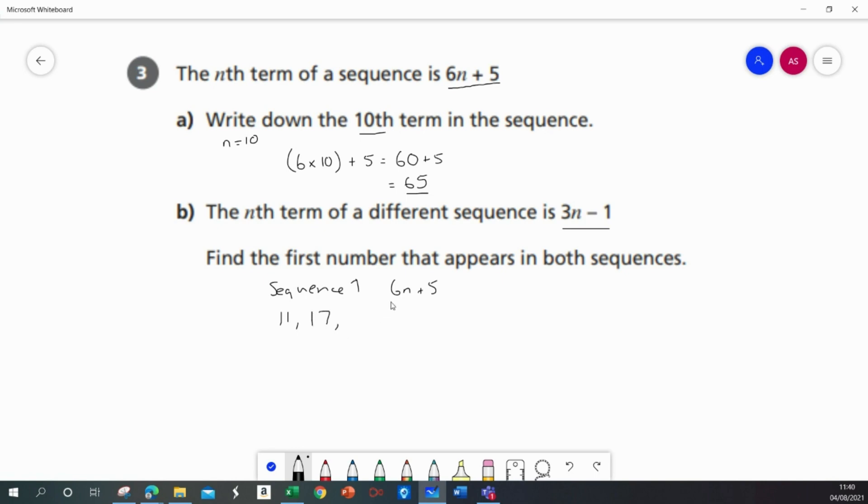The third term, 6 multiplied by 3 is 18 plus 5, 23. We'll do one more. The fourth term, 6 times 4, 24 plus 5 is 29. And I noticed that the steps are in the 6s as the formula is 6 times n plus 5.